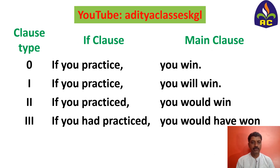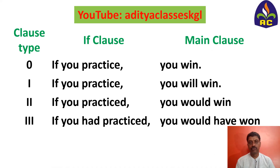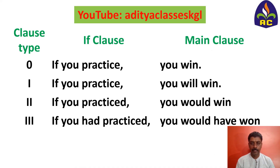Another example: if you practice, you win — that is universal truth and usually happens. If you practice, you will win — it is a suggestion that a sure action will happen in future. If you practiced, you would win — it is a doubtful action. And if you had practiced, you would have won — now it is not possible to happen as it is too late. I hope this video helped you in understanding if conditionals.